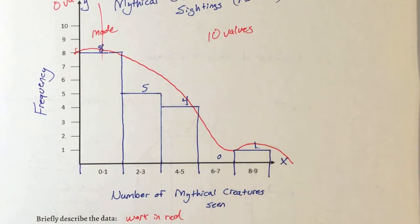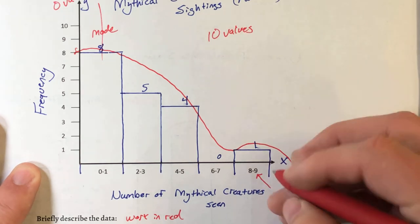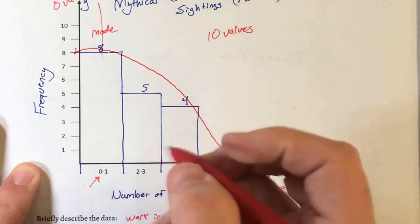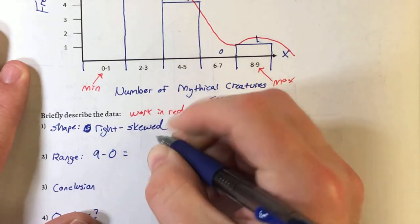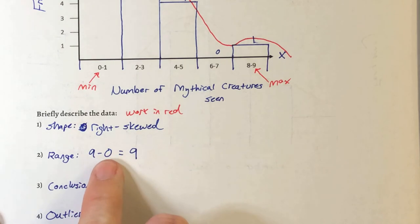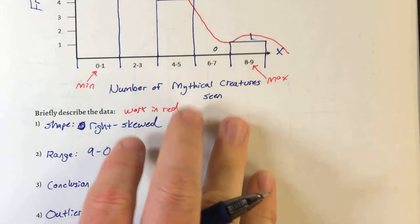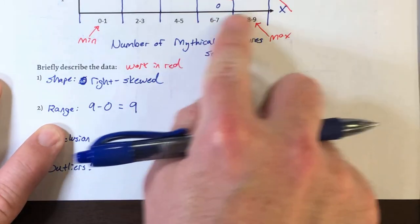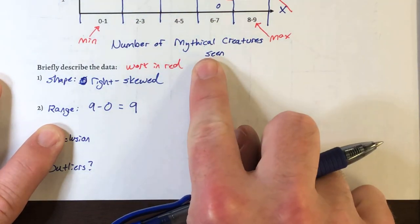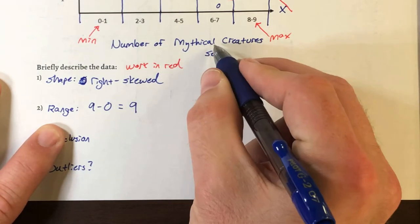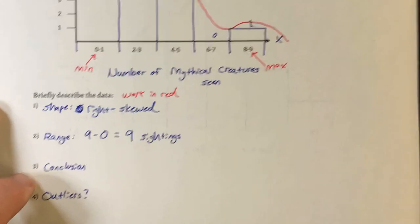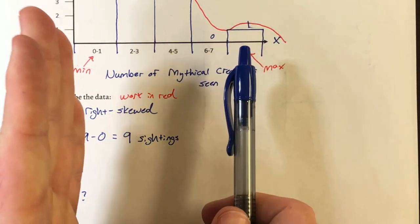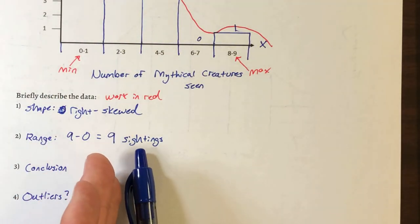Next, what is the range? Our maximum number of creatures possibly seen is nine. Our minimum seen, which is more likely, is zero. So we're going to do nine minus zero, and that equals nine. It's just a coincidence that zero was our smallest number — always be aware of what that is. And actually it's a coincidence that nine was the largest on both examples. Nine what? Nine mythical creatures seen. Let's summarize that with one word: nine sightings. Our range is from zero to nine sightings, so our range is nine sightings.